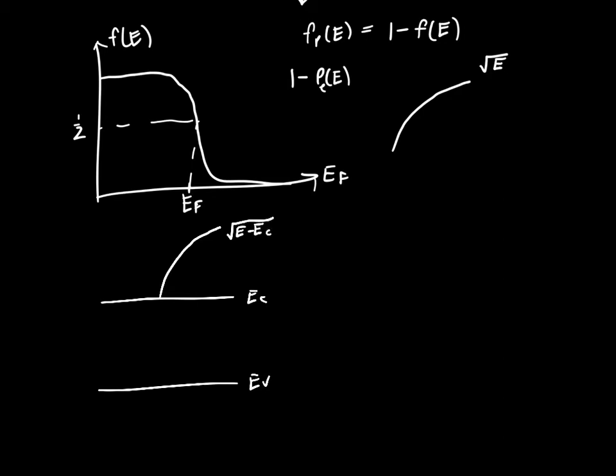This was the energy of electrons. Now the energy of holes is proportional to EV minus the energy. That's because holes very near the top of the valence band don't have very much energy relative to where they started out.